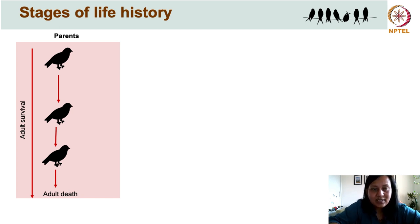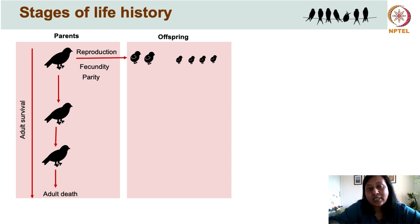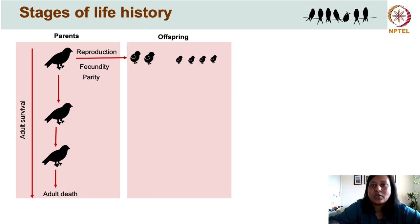At the adult stage, a parent has to decide whether to invest energy in reproduction or in self-maintenance to prolong its life. Even when it comes to reproduction, it must take multiple decisions: how many offspring to produce — which refers to fecundity — how many times to reproduce in its lifetime — which refers to parity — and even whether to produce few large offspring or many small ones, though that is mostly genetically constrained.